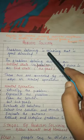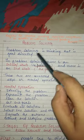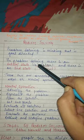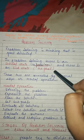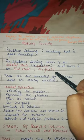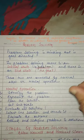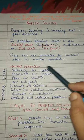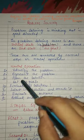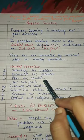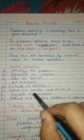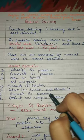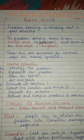Problem solving क्या होती है? हमारी thinking होती है, जो कि goal directed होती है. Problem solving में एक initial state होती है, जो कि हमारी problem है, और एक end state, जो कि हमारा goal है. Initial state और end state में जो भी हमारे mental operations होते हैं, वो हैं: identify the problem, then represent the problem, then plan the solution and set sub-goals, evaluate all the solutions, select one solution and execute it, evaluate the outcome, rethink and redefine problem and solution.